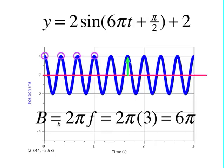What you then do with that is b is equal to 2 pi times that frequency. So you take your 2 pi, you multiply by the frequency of 3 and you get 6 pi.